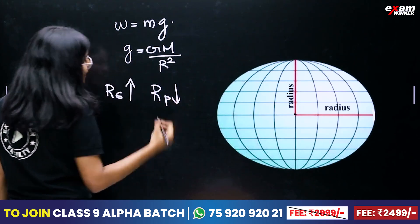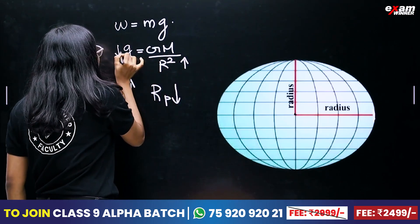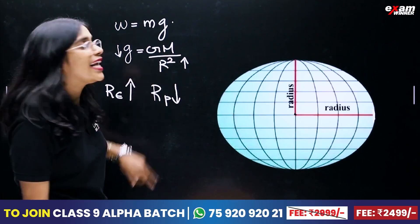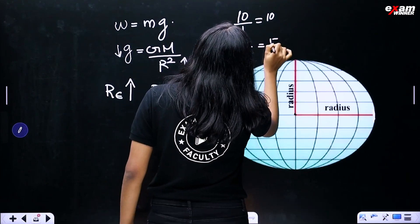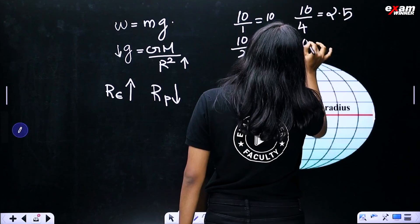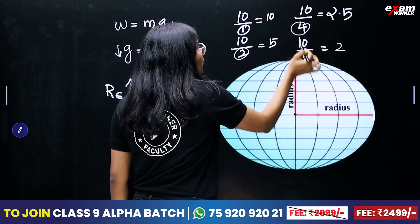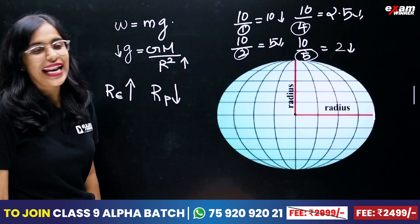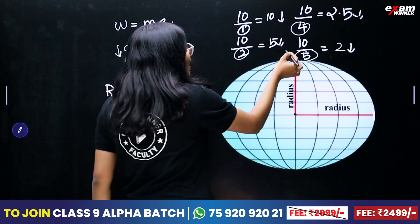Radius to poles is smaller. If you look at the values of the denominator: the value of G is equal to GM divided by R squared. For example, if the denominator is 1, result is 10; if denominator is 2, result is 5; if denominator is 4, result is 2.5. So the value of the result decreases as R increases.